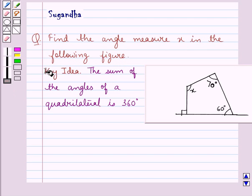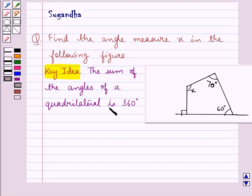The key idea to be used in this question says, the sum of the angles of a quadrilateral is 360 degrees. Now let's see the solution.